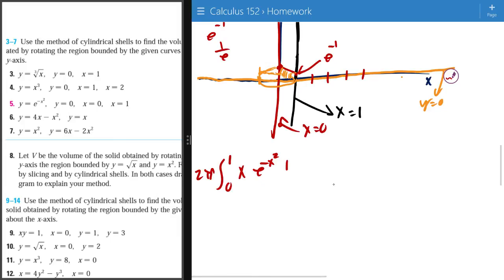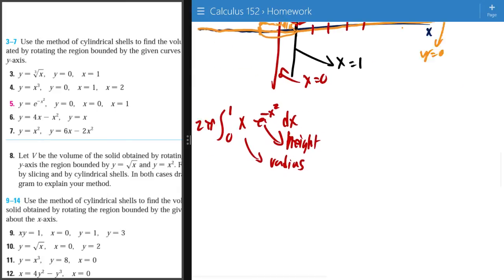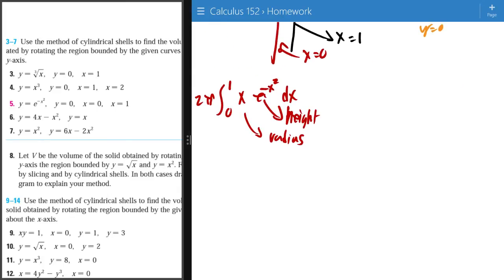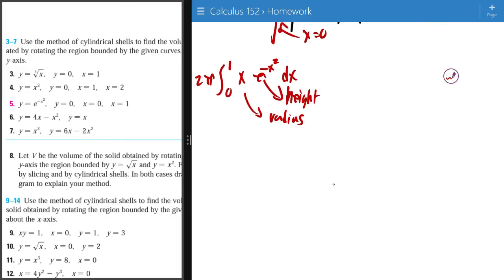And then the height will always be e to the power of negative x squared. I'm not even going to explain, this is too hard to explain. So this is the radius, this is the height. Okay, so now what we need to do is we need to find the integral of this thing.